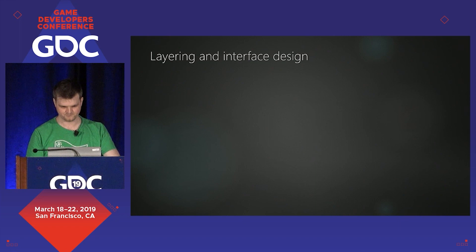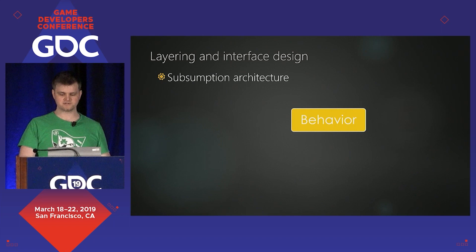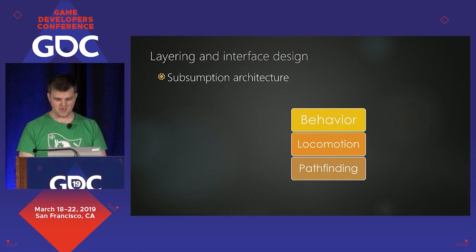The first topic I'll touch on is layering and the closely related topic of interface design. Rodney Brooks described the idea of a subsumption architecture — a bottom-up approach to AI where high-level competencies depend on lower-level skills. We do this in AI without really thinking about it. In your guard search behavior, you'll have something like run to the last place you saw the player, but that behavior depends on a lower-level locomotion system, which might depend on an even lower-level pathfinder.